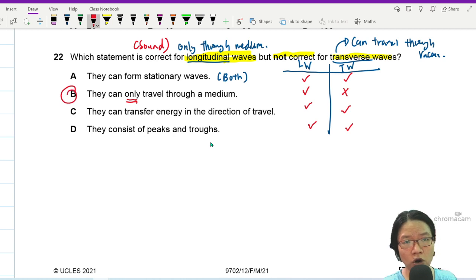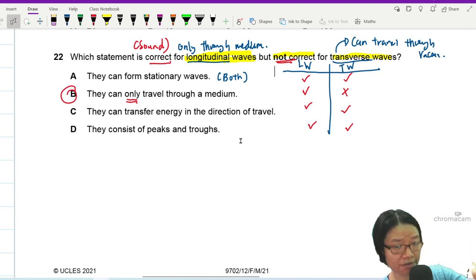Okay. Correct for longitudinal wave, not correct for transverse wave. So evaluate the statement one by one. All wave can transfer energy in the direction of travel. The difference here is longitudinal wave particles are parallel. Transverse wave particles are perpendicular. But they both transfer energy. Okay. That is the definition of wave. And that's it for this question 22.